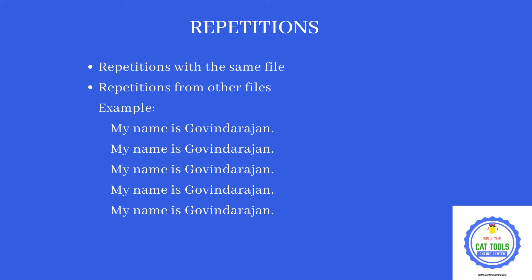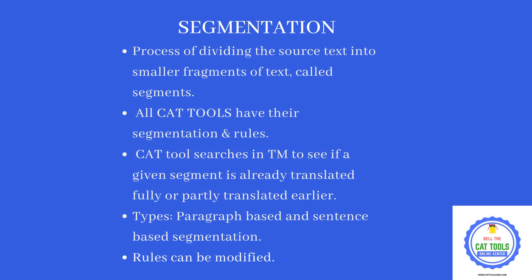If you are handling a project with 4 or 5 files and the same segment appears in the first, second, and third file, it is also considered a repetition. If you translate it in the first file, it will be automatically filled in the second, third, and fourth files — saving typing effort, energy, and time. This is one of the main advantages of any CAT tool.